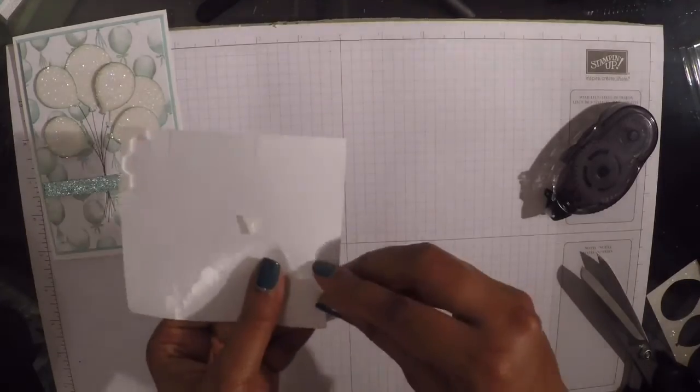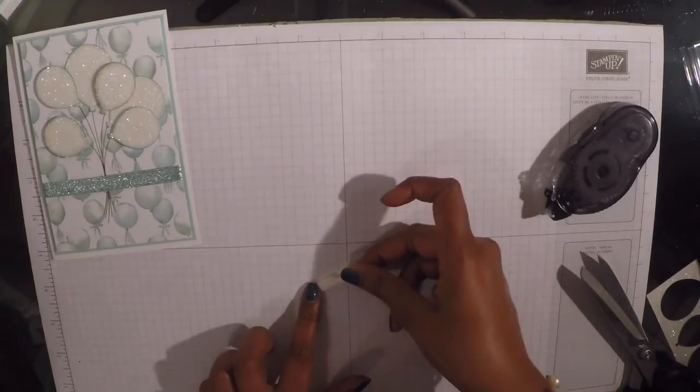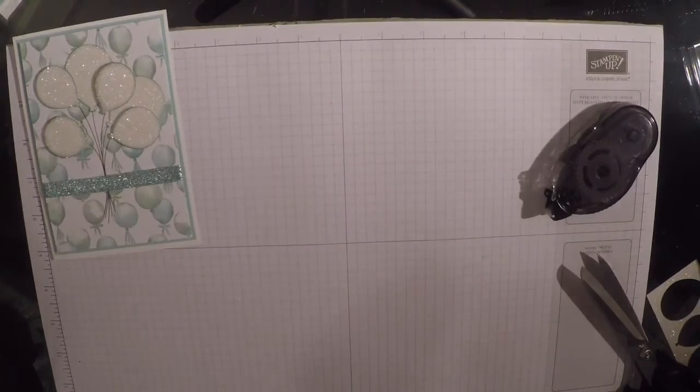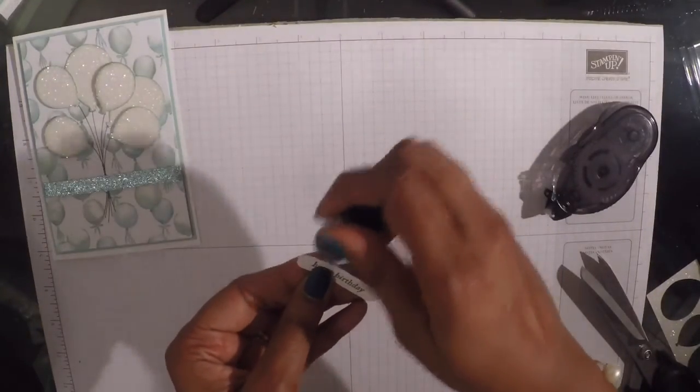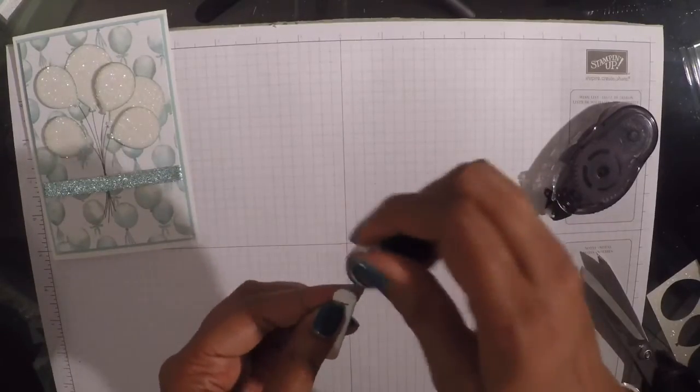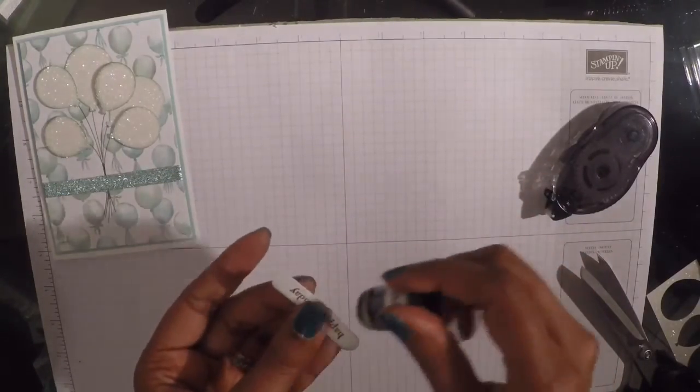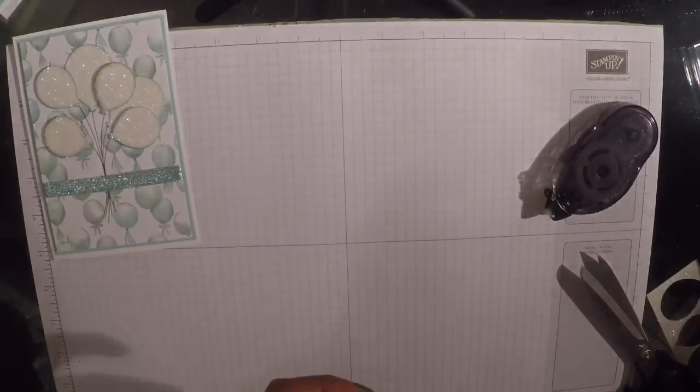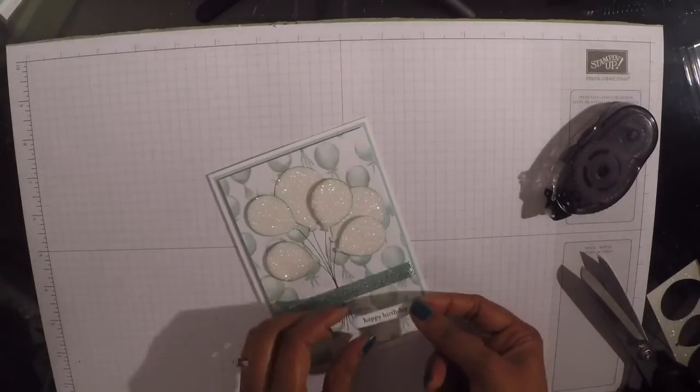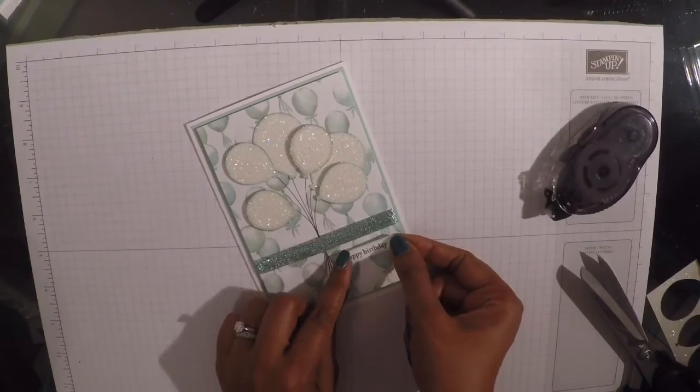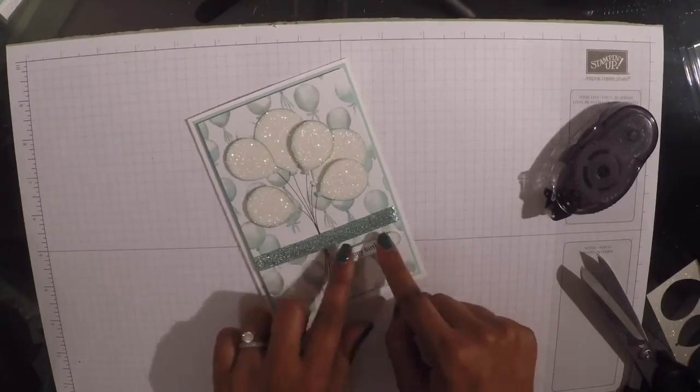Just cut my piece off from that edge there. And I'm just going to stick that to the back. And I'm also going to edge my sentiment in the Pool Party dauber once more. Stick that down.